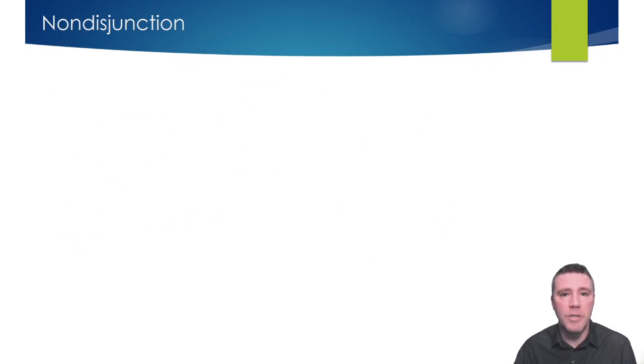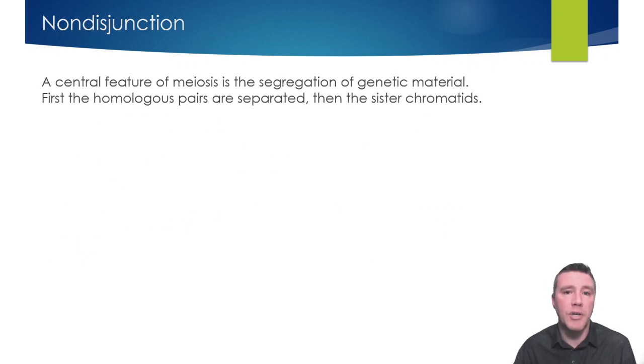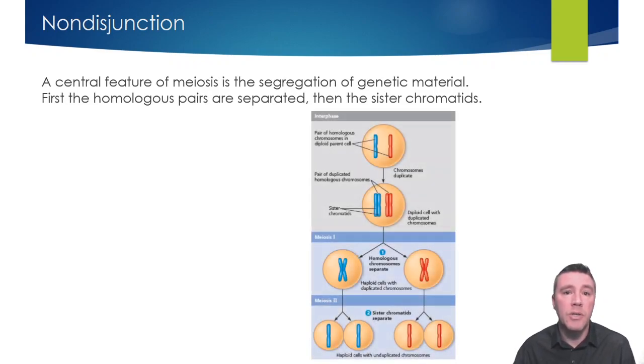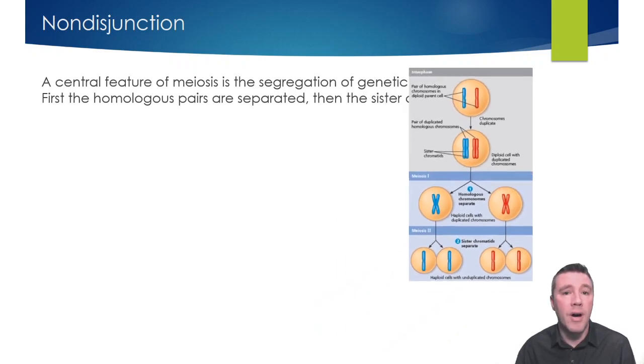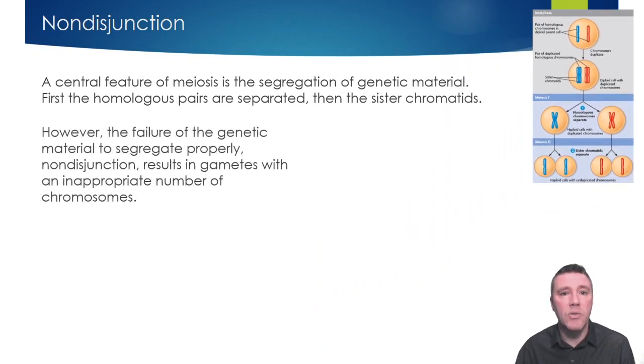A key characteristic of meiosis is the segregation of genetic material. In meiosis 1, homologous pairs are on the cell's equator, and it's those pairs that are separated from one another. Meiosis 2 results in the separation of sister chromatids. But what if, due to a mistake during anaphase, the genetic material does not separate the way it's supposed to? This error, called nondisjunction, would result in gametes with an incorrect complement of chromosomes.